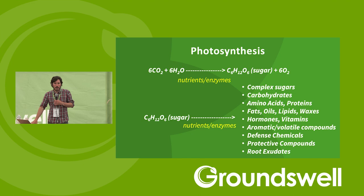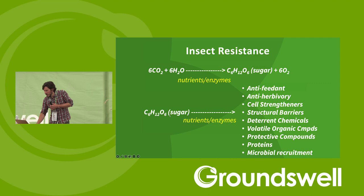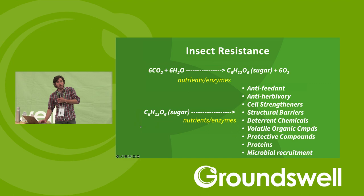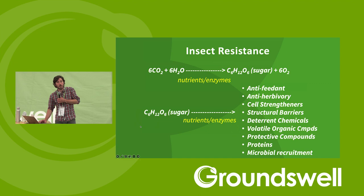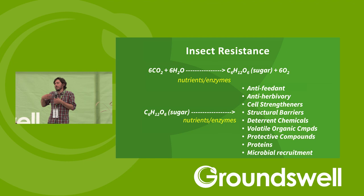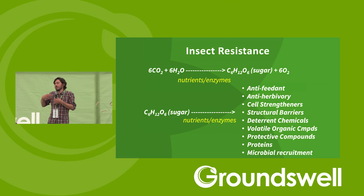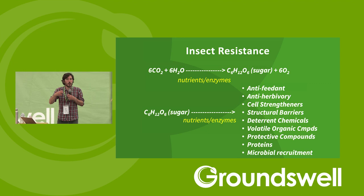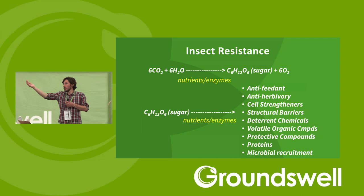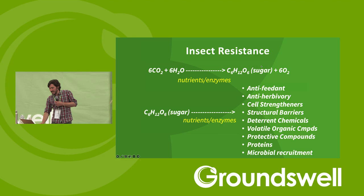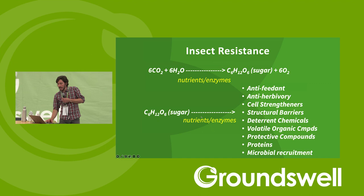The same processes we target when managing plant nutrition to boost yield are the same when we're trying to enhance plant immunity and build resistance against pests and disease. For insect resistance, we use the same building block and essential nutrients, but now we're building anti-feedant, anti-herbivory compounds that are distasteful to insects or upset their digestion — cell strengtheners, structural barriers, deterrent chemicals, volatiles, smells and scents that deter the pest or attract beneficial insects. It's just a different selection of secondary chemicals being produced.